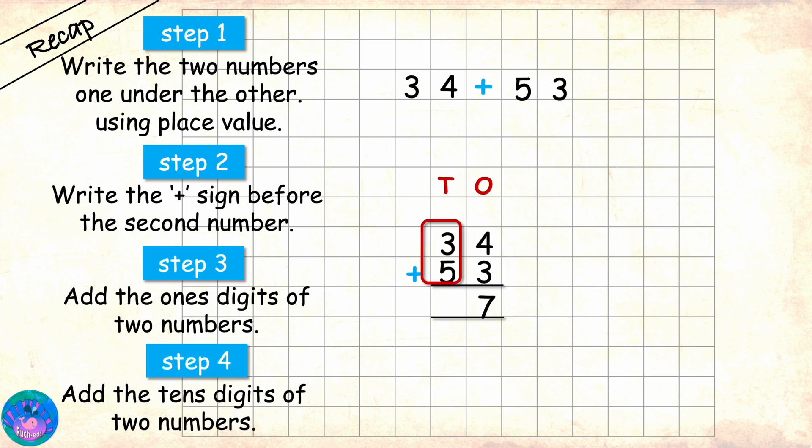Then we move to the tens place, where we have 3 and 5. 3 plus 5 equals 8, which we will write down as the answer for the tens place. This means that 34 plus 53 equals 87. Very good, Sam.